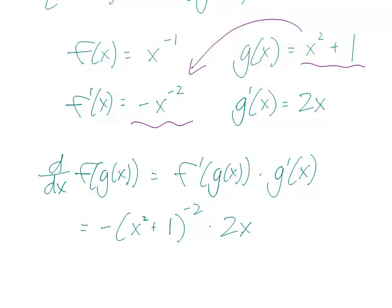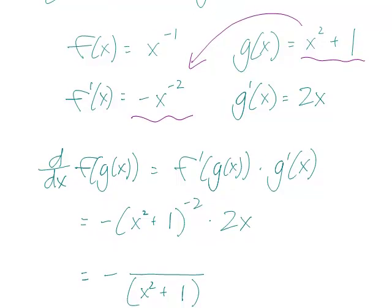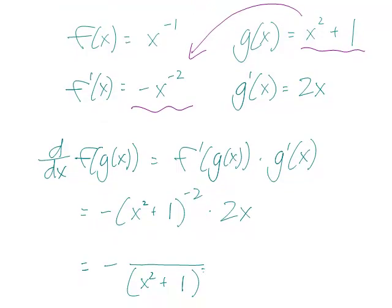And we can massage this a little bit to make the answer look a little nicer. First of all, we have a minus sign in the front. And then to the minus 2 means reciprocate and square. So that means x squared plus 1 is really in the bottom. And you're squaring it. The minus means it's on the bottom. And then you square for the 2. And 2x is on top.